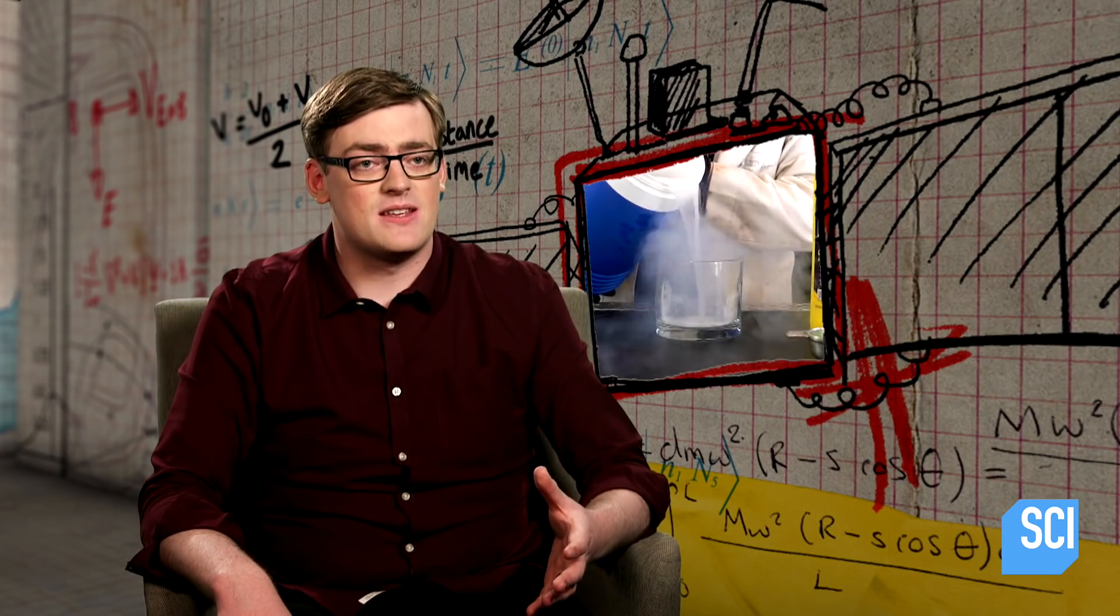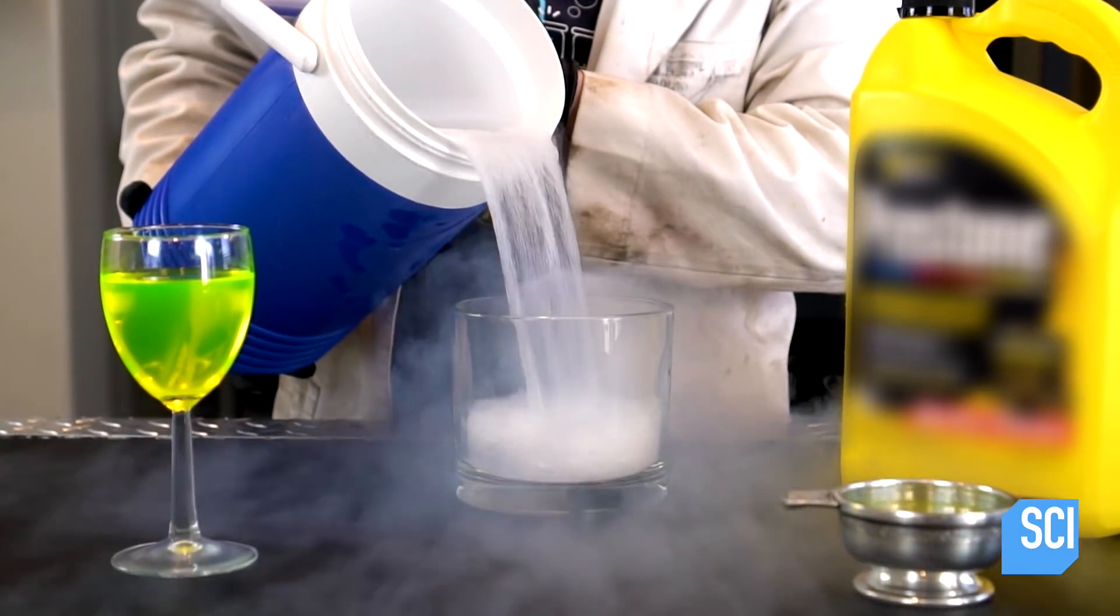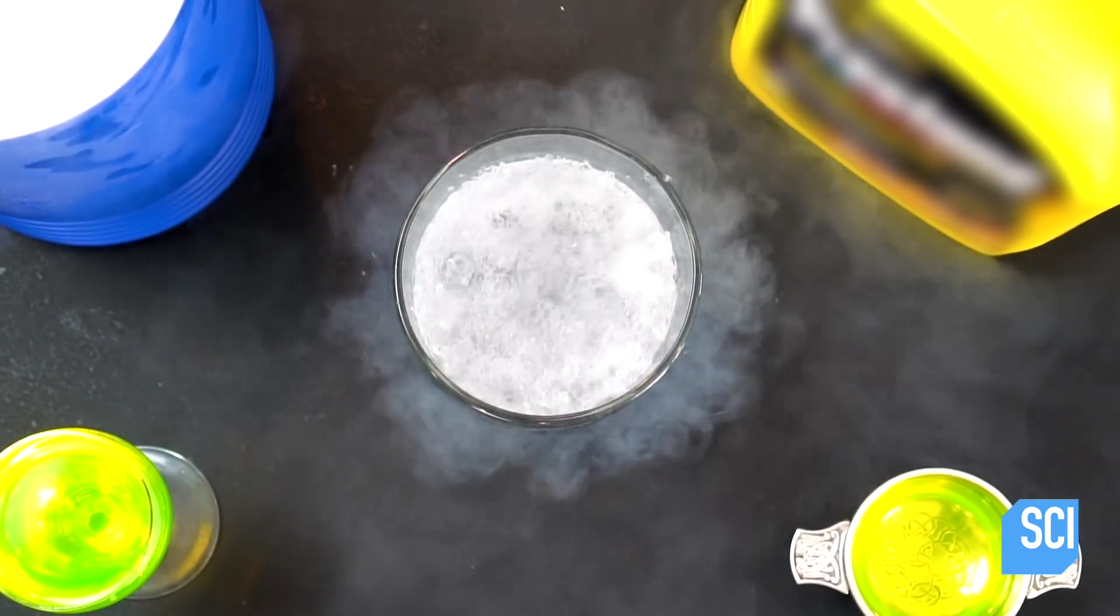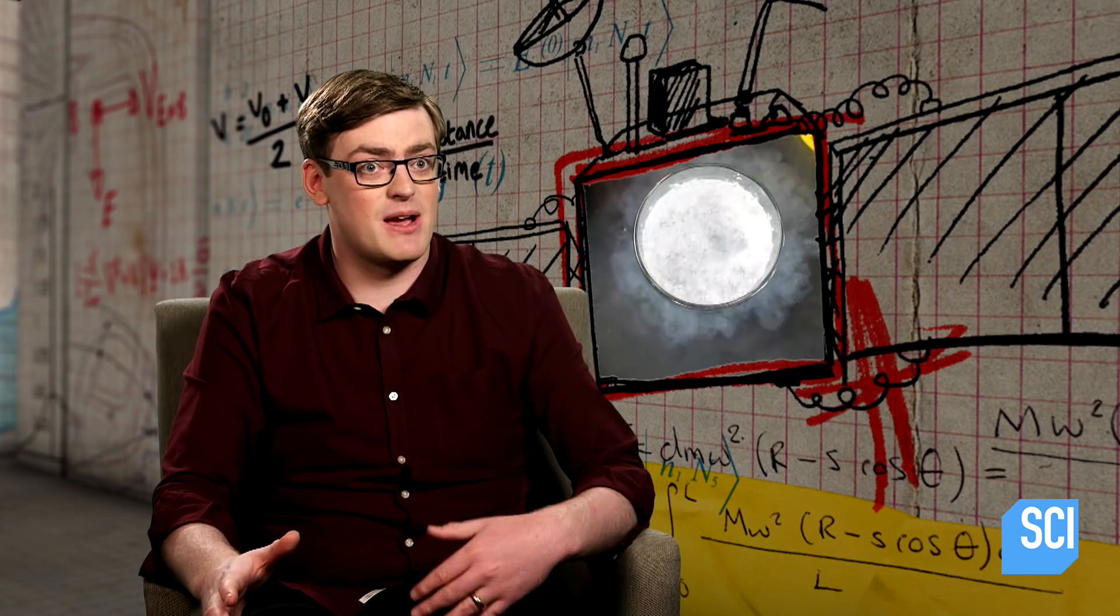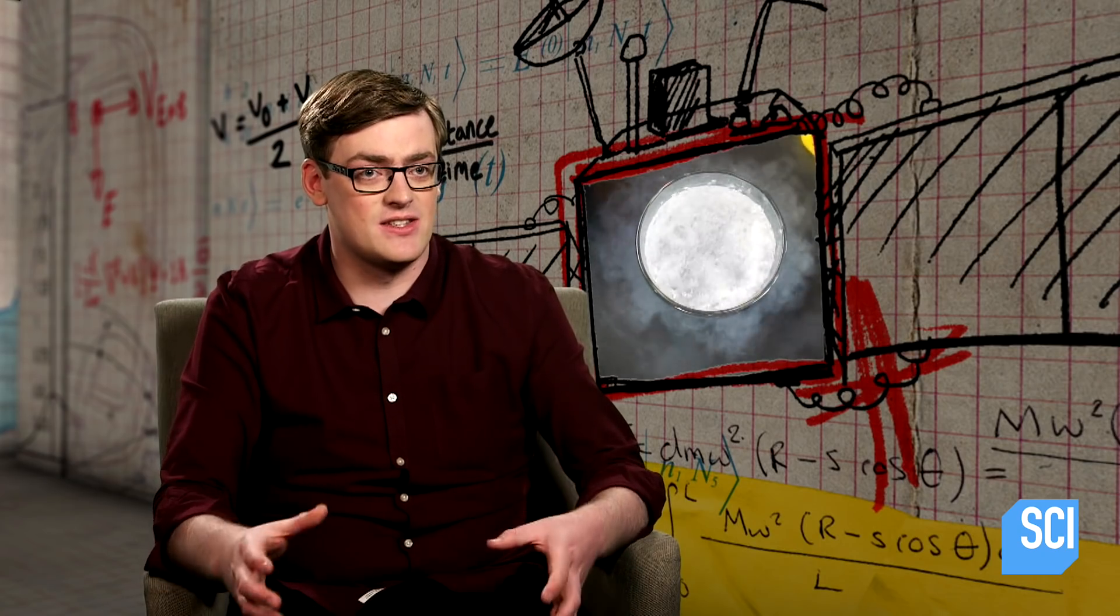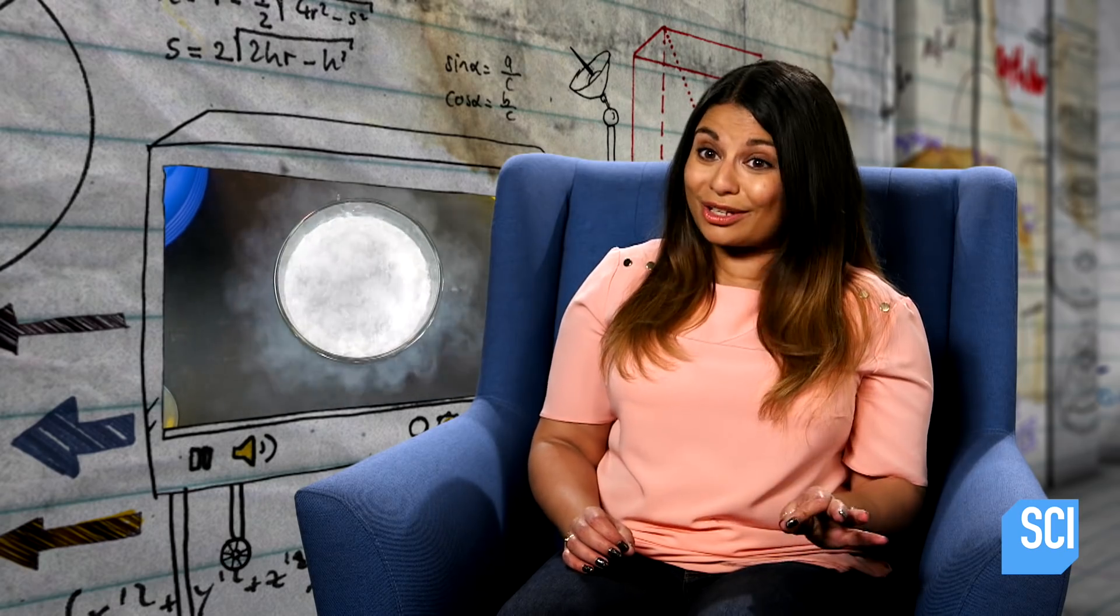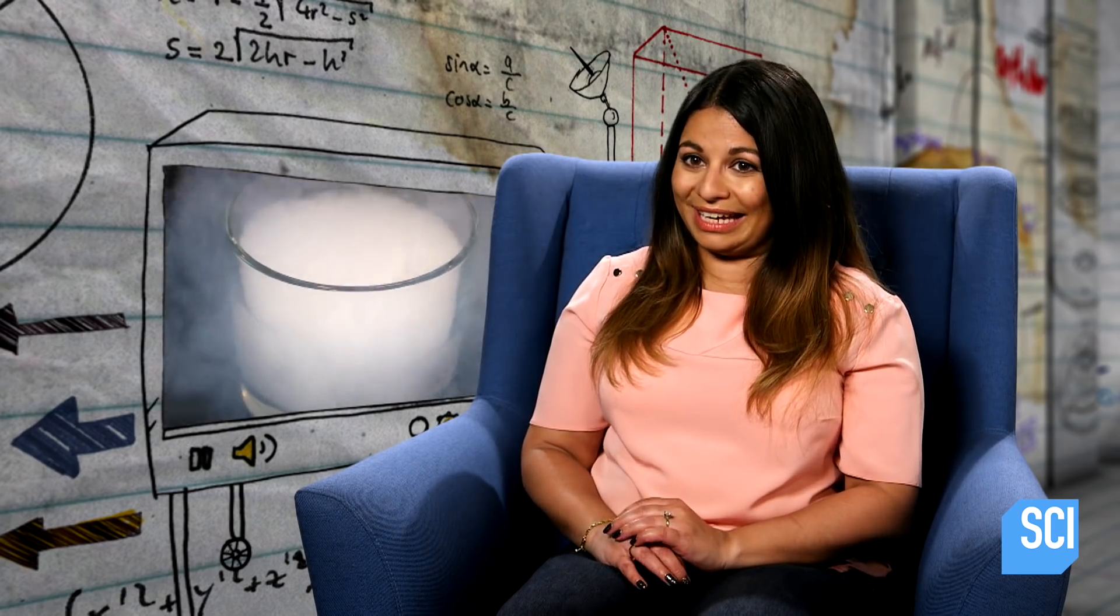To freeze the antifreeze, Grant uses liquid nitrogen. Now, nitrogen has a boiling point of minus 321 degrees Fahrenheit, that's minus 196 degrees Celsius. That makes it a lot, lot, lot colder than the freezing point of the antifreeze.